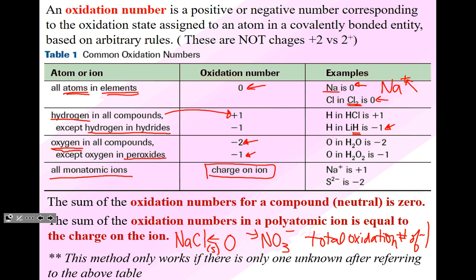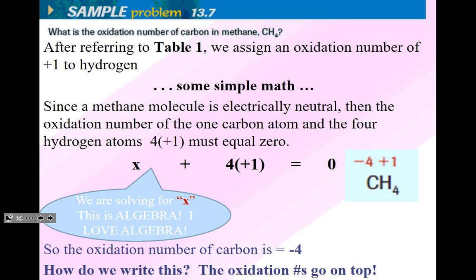This method only works if there is only one unknown after referring to the table above. For example, if I have a compound with both carbon and sulfur as unknowns, I can't solve for both. We're basically going to use algebra to solve for one particular thing — assign the known oxidation numbers from the table, then apply simple math to find the unknown. We're going to assign oxidation numbers of plus one to hydrogen because we know that's a rule.